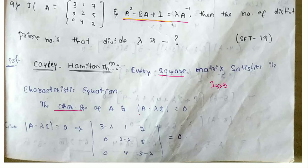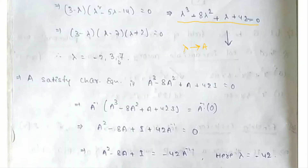We have the equation A² - 8A + I = λ·A⁻¹. From the characteristic equation, we multiply both sides by A inverse. A·A⁻¹ gives the identity matrix, so: A² - 8A + I + 42·A⁻¹ = 0, which matches the given format.